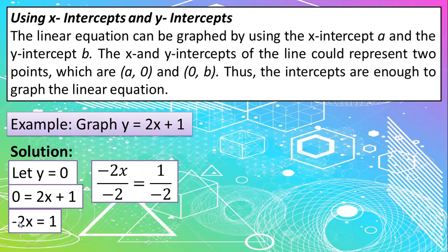That's why we can divide both sides by negative 2 so that we can cancel out what's beside x. So with that, we can cancel negative 2 and negative 2. So the value of x now is simply equal to negative 1 half. So meaning to say, if y is equal to 0, your x is equal to negative 1 half.